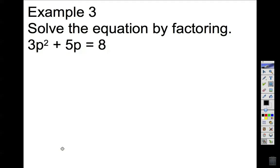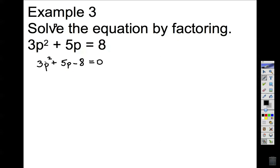Here is the example: we're going to solve the equation by factoring. We set our function equal to zero: 3p squared plus 5p minus 8 equals zero. I subtracted 8 from both sides. Since the leading coefficient is no longer 1, I cannot simply multiply to get negative 8 and combine to make 5. So what we're going to do is slide and multiply — slide the 3 and multiply with the negative 8. That creates a fake polynomial of p squared plus 5p minus 24 equals zero.